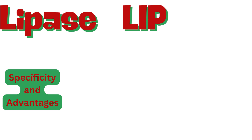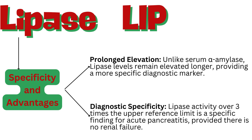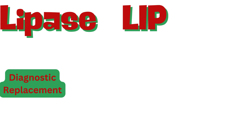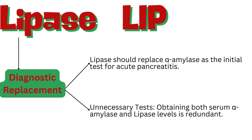Unlike serum alpha-amylase, lipase levels remain elevated longer, providing a more specific diagnostic marker. Lipase activity over 3 times the upper reference limit is a specific finding for acute pancreatitis, provided there is no renal failure. In the emergency department, lipase is the preferred test and should replace alpha-amylase as the initial test for acute pancreatitis. Obtaining both serum alpha-amylase and lipase levels is redundant.